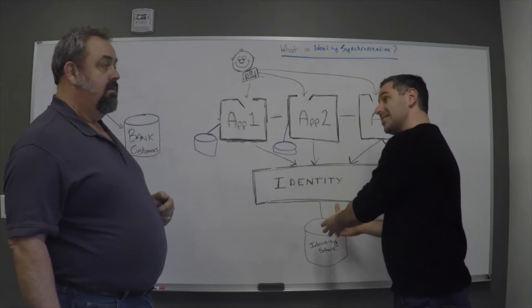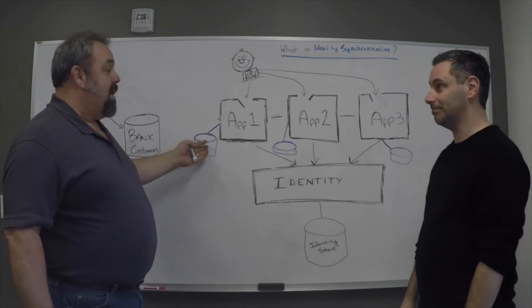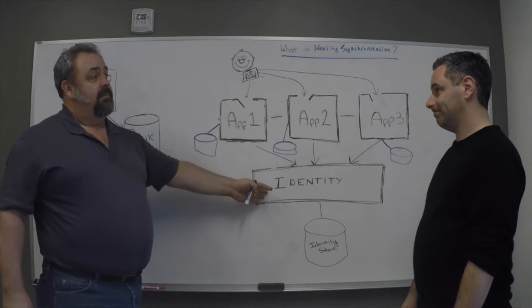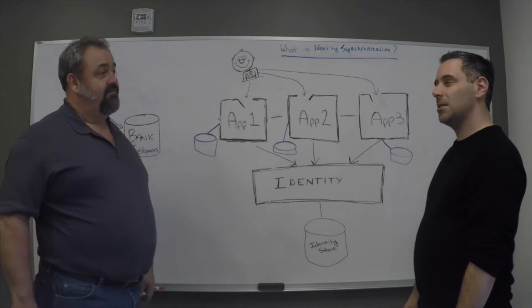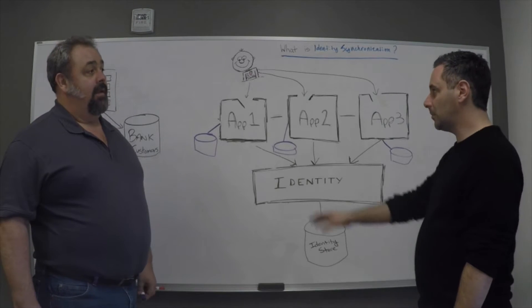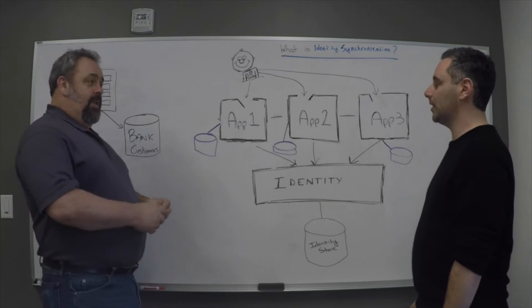So if we were to go with this point that you're making—within the complex enterprise, not all identity data is stored within the identity store that's just attached to the identity system. A lot of these apps have no idea that we want to centralize everything. They've still got things internally. So I'm starting to see a theme here. When we talk about synchronization, it's about how you coordinate identity across all these different data stores. That sounds hard.